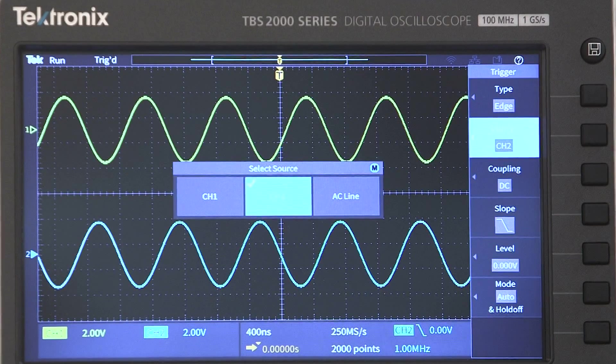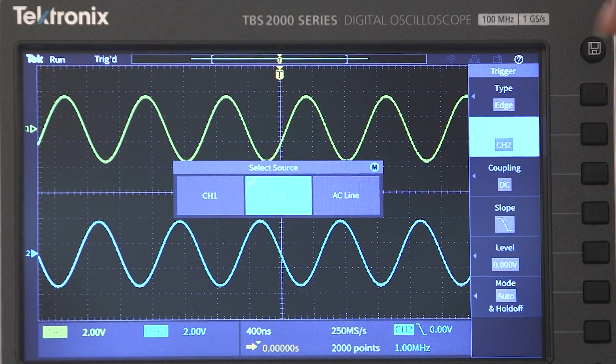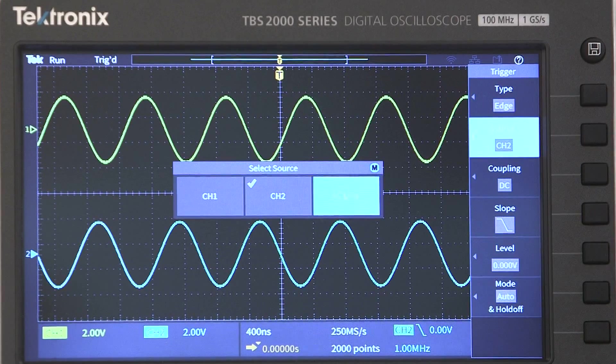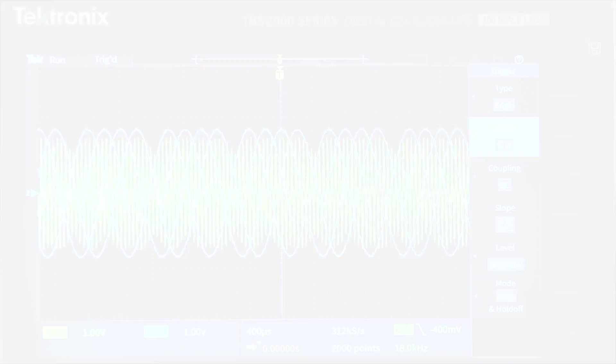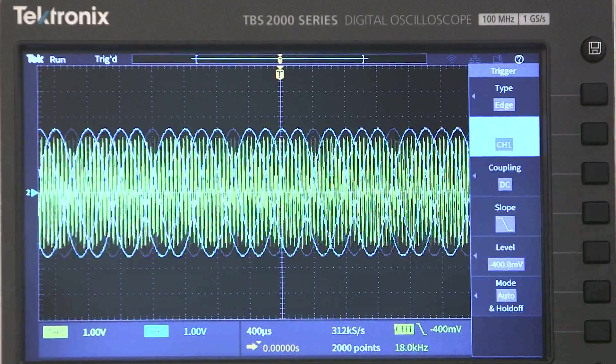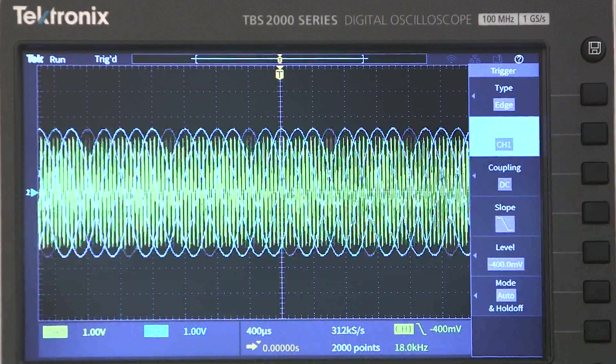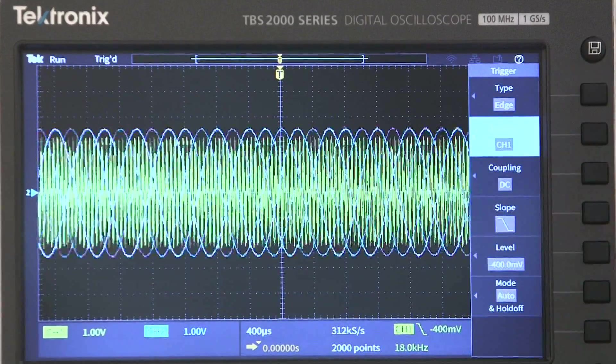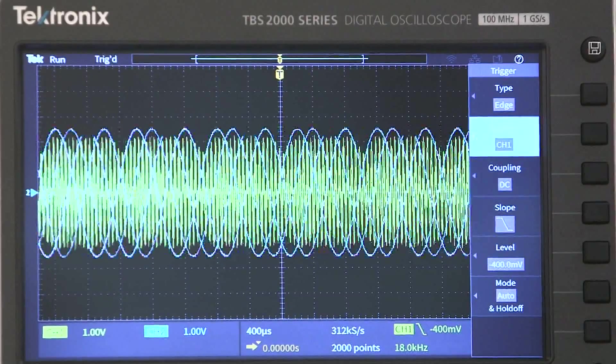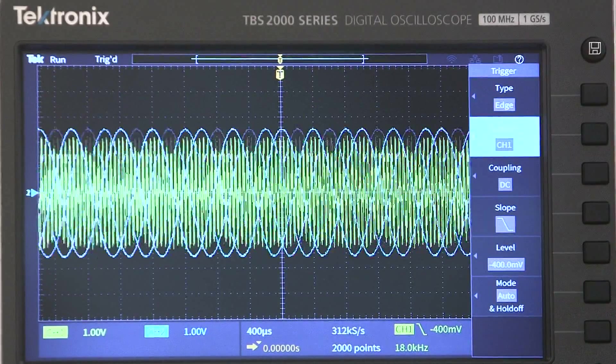The AC power line can also be used to sync up the scope. This is useful when you're working on power supplies or looking for power line noise in a circuit. Finding the right trigger source can be the key to analyzing complex signals. For example, it can be difficult to get a stable display on an AM signal like this one. But if you can connect the modulating signal or envelope and use it as a trigger source, it's easy to get a clear picture.